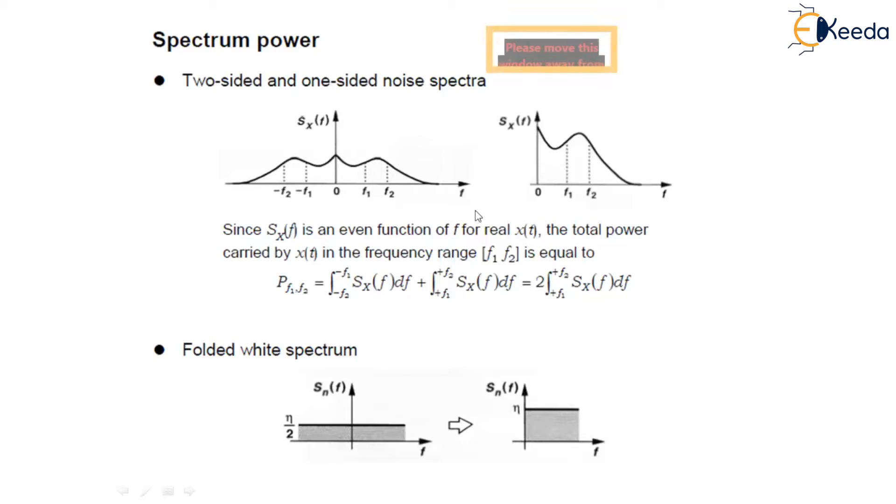Now, spectrum power. Since SX(F) is an even function of F for real x(t), as you can see over here, the total power carried by x(t) in the frequency range [F1, F2] equals the integral from -F2 to -F1 of SX(F)dF plus the integral from F1 to F2 of SX(F)dF, which can be written as twice the integral from F1 to F2 of SX(F)dF.